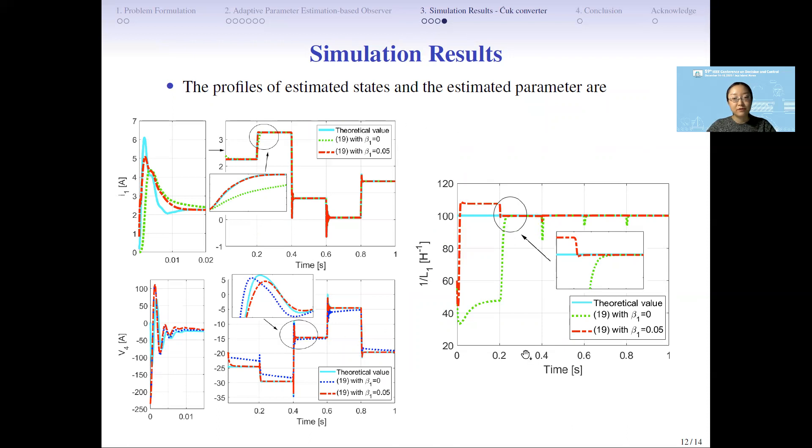These three figures are showing the result of estimated states and the parameter. You could see the estimation result is converged to the theoretical value. Also, we compare by introducing the beta 1. You could see in the red line, when we introduce beta 1, that means we introduce the instant information, so the convergence of the estimator is more fast.